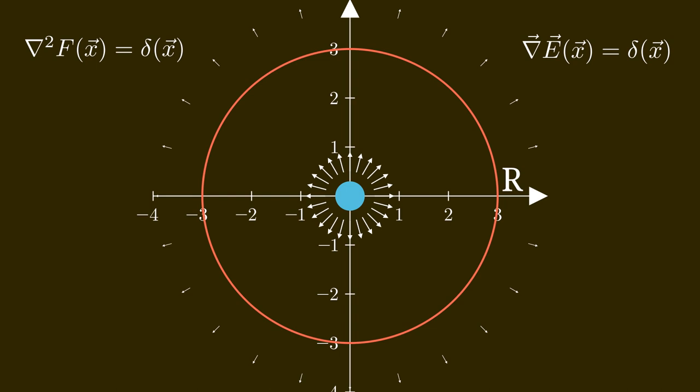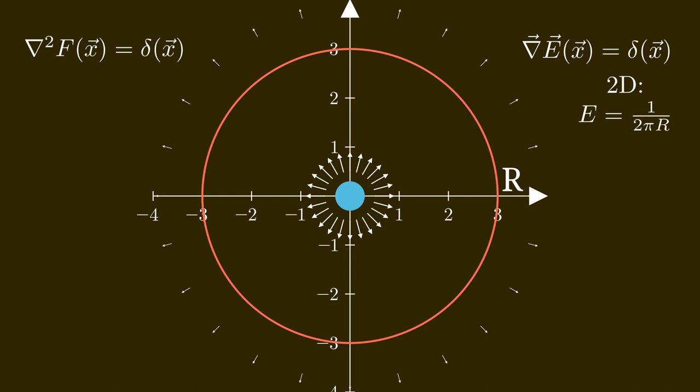That should remind you of Kirchhoff's law. In the three dimensional case the surface of the red ball at radius r is 4 pi r squared, and since the E field is the same at each point we can calculate it easily — it is 1 over 4 pi r squared. Since the E field is the divergence of the potential f we need to integrate this, and since everything is symmetrical this is easy and we get that the potential is proportional to 1 over the absolute value of r. This is in three dimensions. In the two dimensional case we only need to divide by the length of the circle instead of the area of the sphere, giving us that E is 1 over 2 pi r. Then again the integration gives us the potential f as proportional to the logarithm of r.